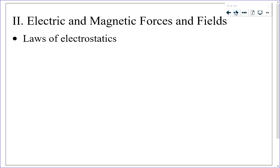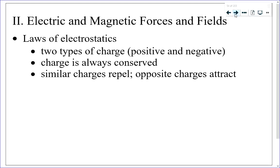The laws of electrostatics: there are two types of charge, positive and negative; charge is always conserved; similar charges repel and opposite charges attract. In the macroscopic world, the charge that transfers is typically electrons — negative charge moves around while positive charge resides in the nuclei of atoms. When discussing charging objects, grounding, or electrical circuits, it's electrons doing all the action.